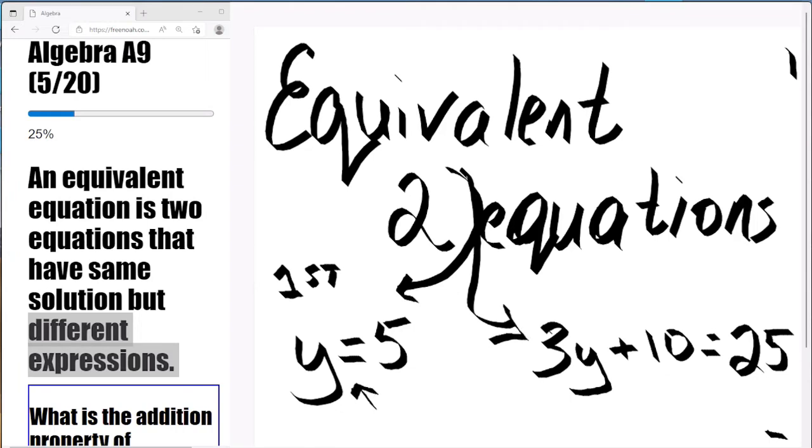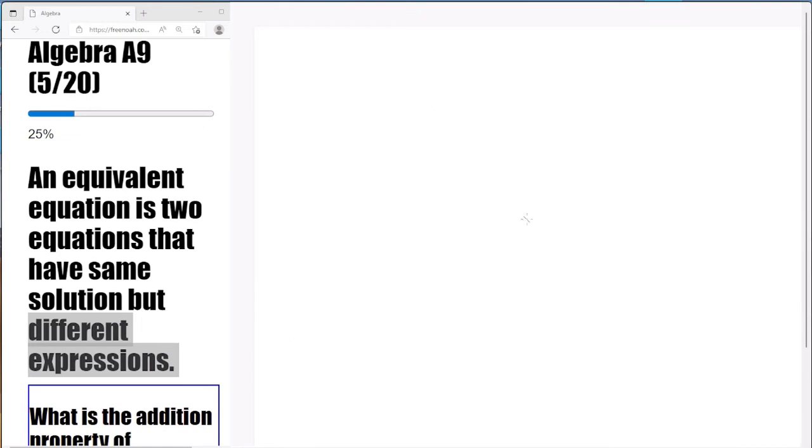How about we plug in the 5 into this equation, 3y plus 10. Well, 3 times 5 is 15, plus 10 is 25. So these two expressions, equations, are equivalent.